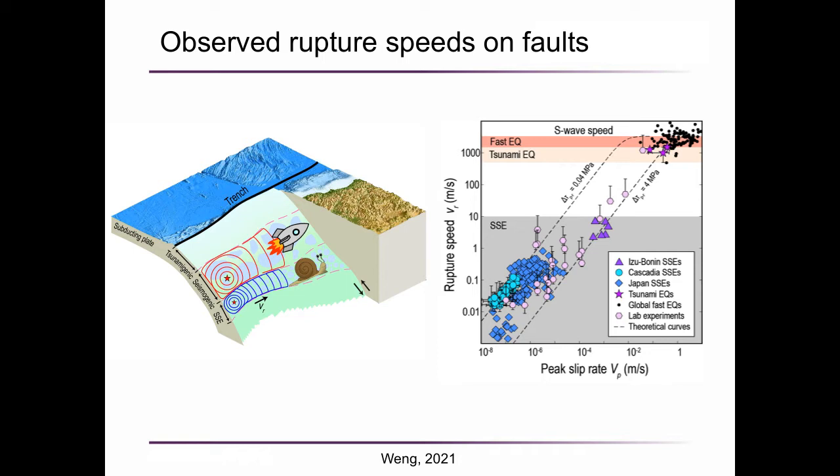Few observations show that slow slip events may even trigger earthquakes. For both large slow slip events and earthquakes, their rupture length is usually longer than their width. On the right figure, I compiled the global dataset of slow slip events, regular earthquakes, and laboratory experiments. The vertical axis is the rupture speed, the horizontal axis is the peak slip rate. You can find the observed rupture speed spans a wide range from as slow as a snail up to as fast as a rocket. Rupture speed increases with peak slip rate.